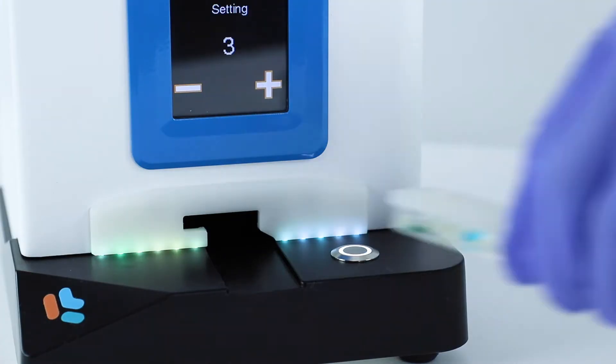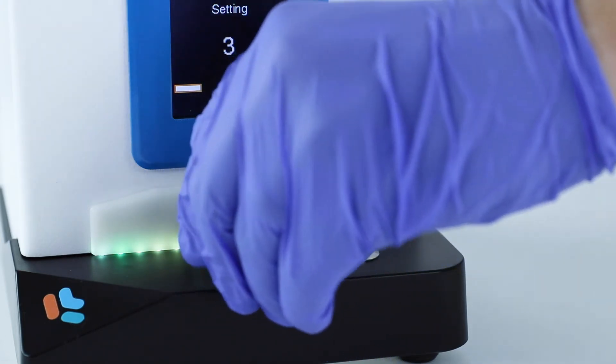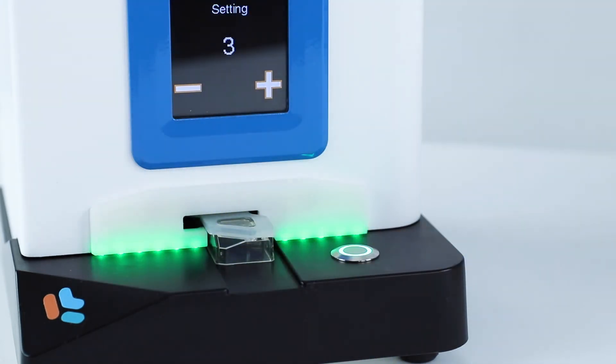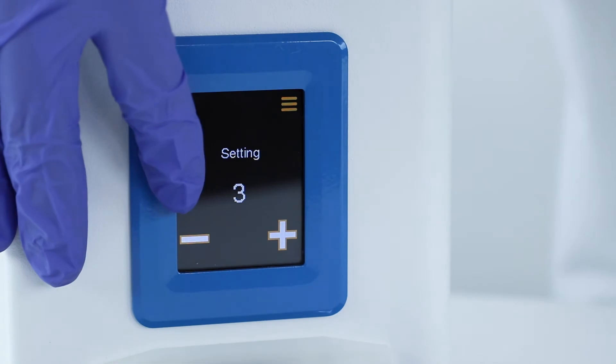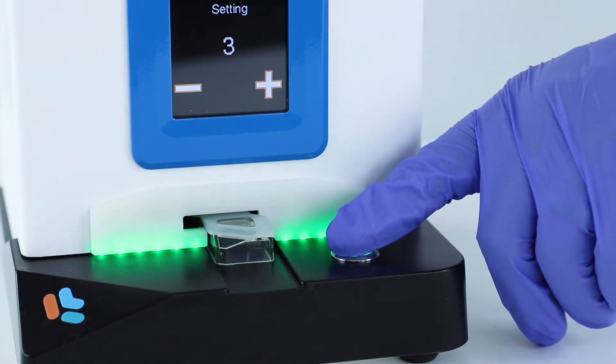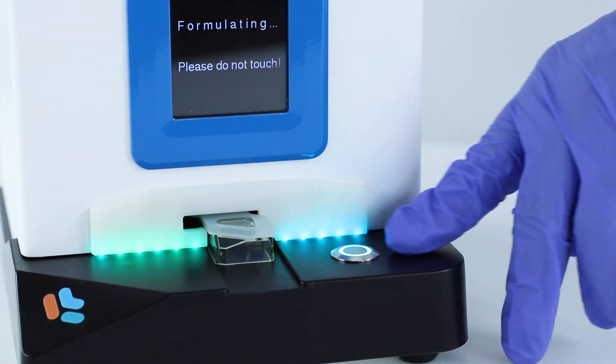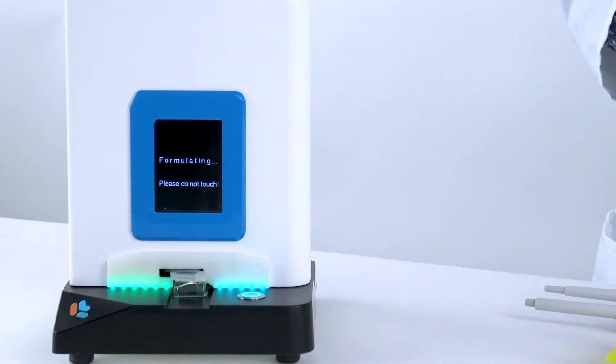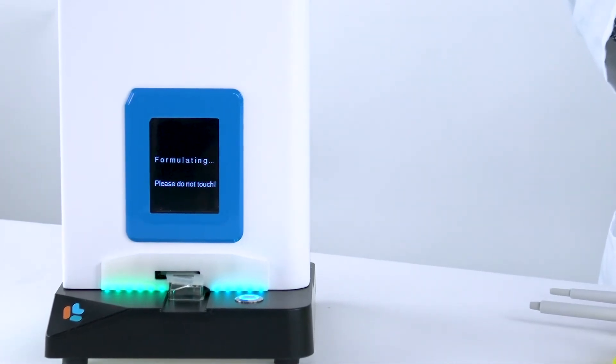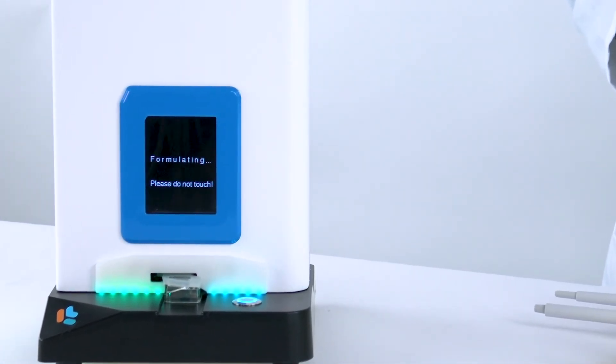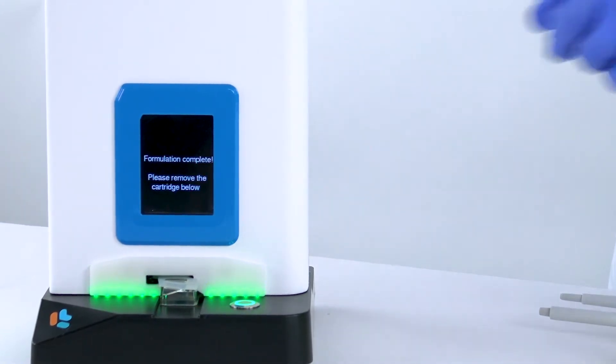Cap your cartridge and place it into the SPARK. The SPARK will illuminate green. Make sure the SPARK is set to the correct setting, and then press the button. The SPARK screen will indicate when the formulation is complete.